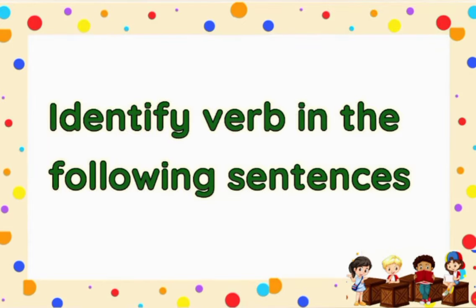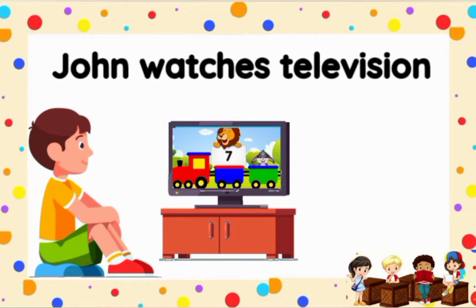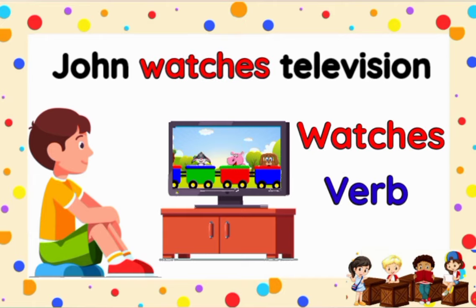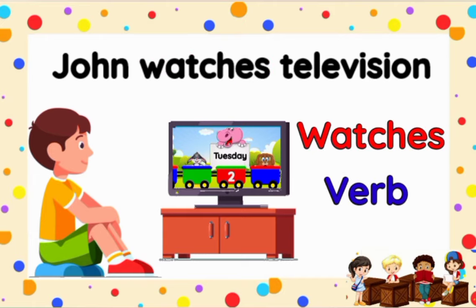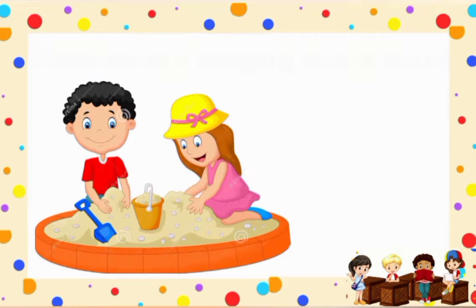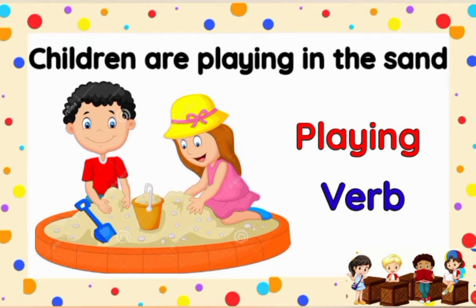Identify a verb in the following sentences. 'John watches television.' The word 'watches' is a word that tells us about an action that John does, so 'watches' is a verb. 'Children are playing in the sand.' The word 'playing' is a word that tells us about an action that children are doing.